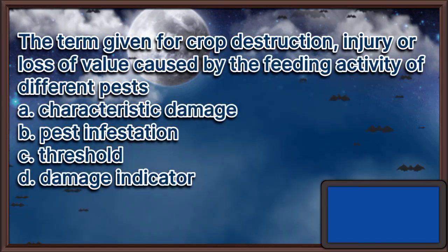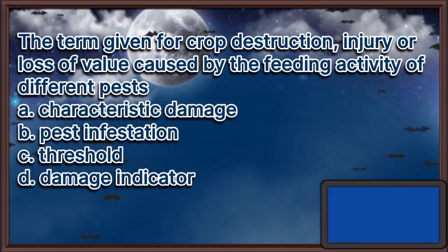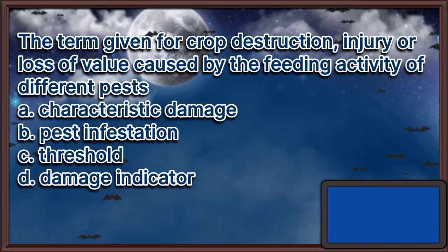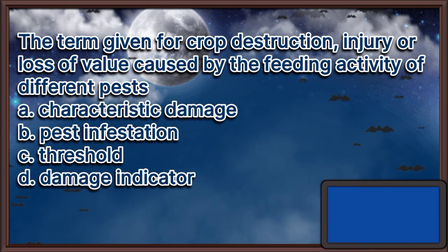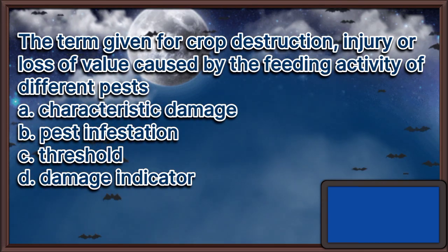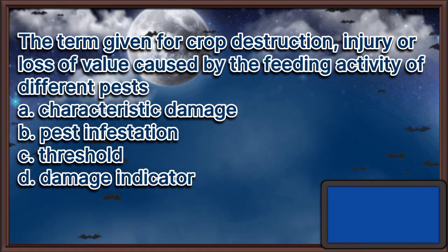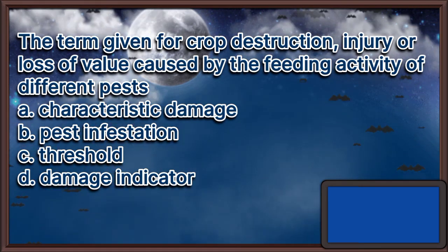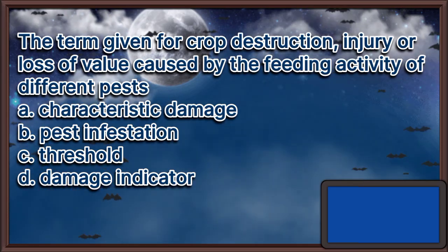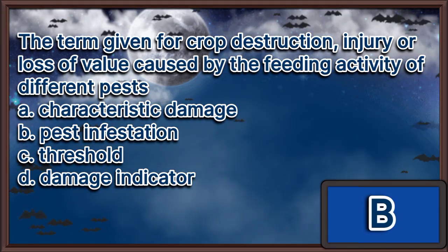The term given for crop destruction, injury, or loss of value caused by the feeding activity of different pests: A. Characteristic damage, B. Pest infestation, C. Threshold, D. Damage indicator. The answer is letter B.